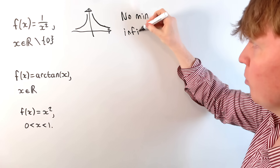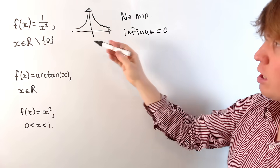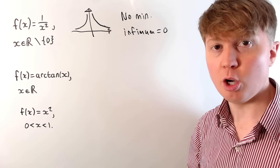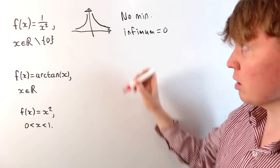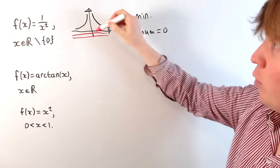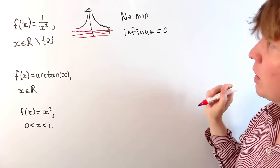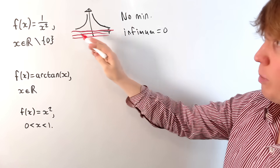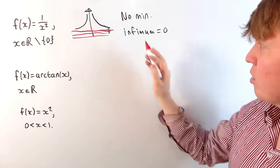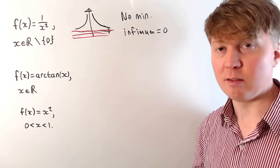For this one, we can say there's no minimum, but we could say that this has something called an infimum. The infimum here is equal to 0, because we think of this as being the biggest possible lower bound. You could take a lower bound of -1 or -½, but if you go up to 0, this is the biggest possible lower bound, so our function is always greater than that. So this does have this idea of a biggest lower bound — the infimum.